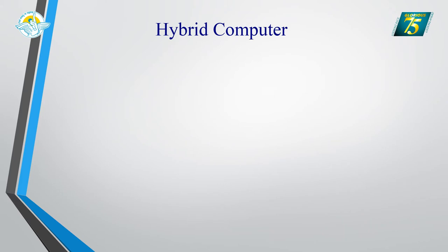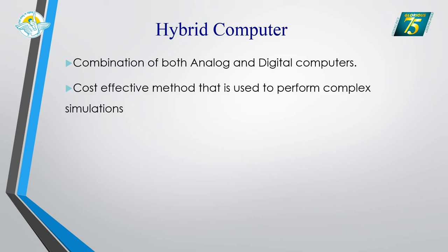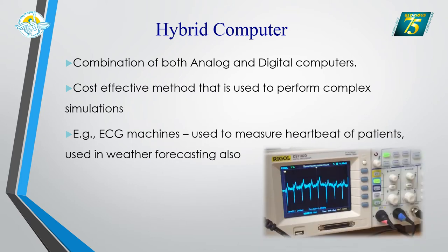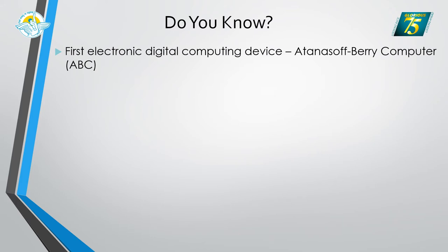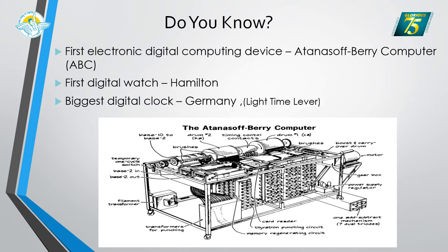The next type is the hybrid computer, which is a combination of both analog and digital computers. They are cost-effective and used to perform complex calculations. Examples include ECG machines used to measure heartbeats, and weather forecasting systems. The first electronic digital computing device was the Atanasoff-Berry Computer, known as ABC. The first digital watch brand is Hamilton, and the biggest digital clock can be found in Germany.